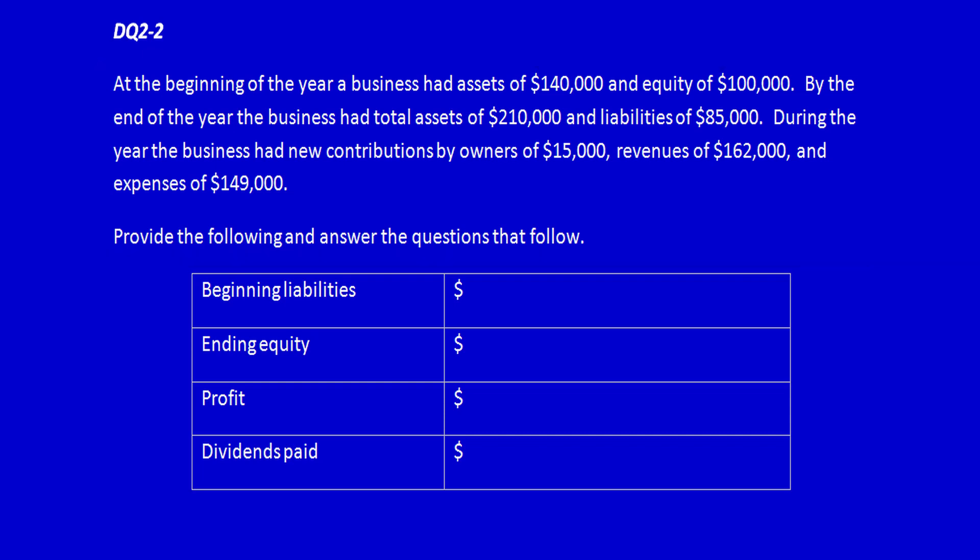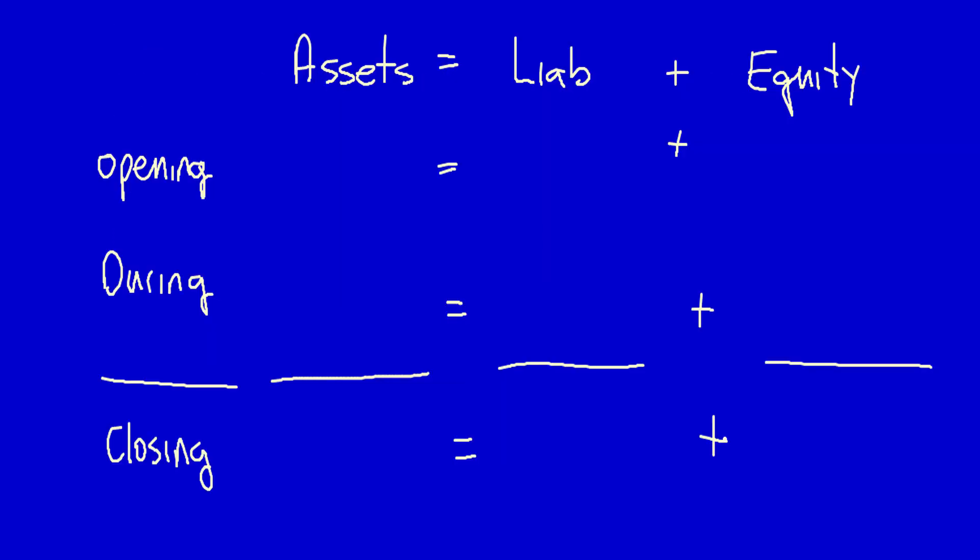We have some blank boxes to fill out, so we need to analyze the information using the regular format. We'll start by putting in the known numbers using the information given in the question. We know that at the beginning of the year, the business had assets of $140,000 and equity of $100,000.